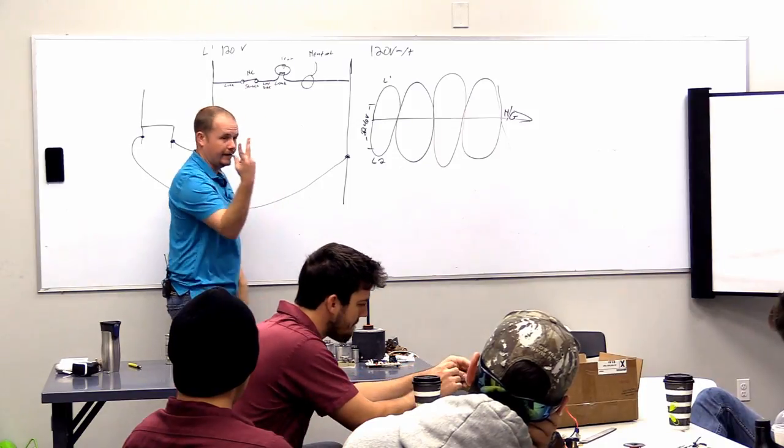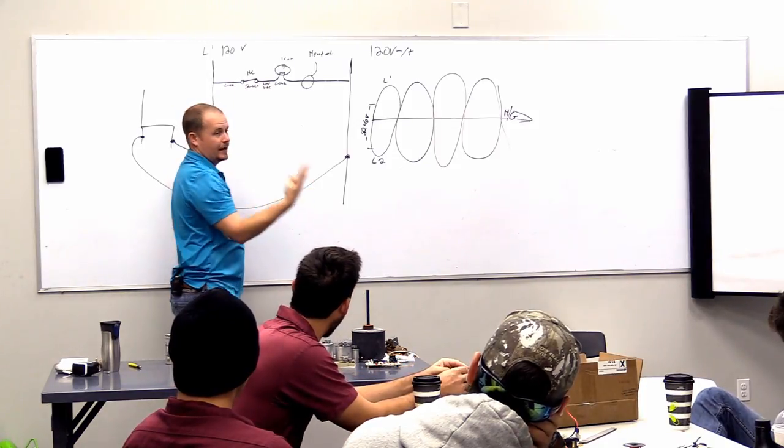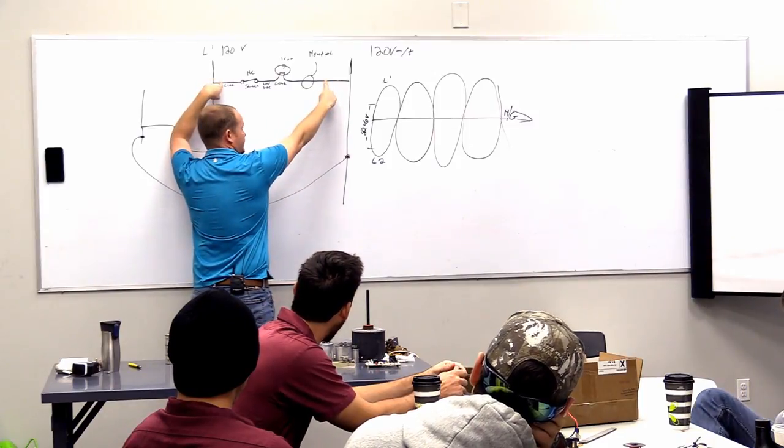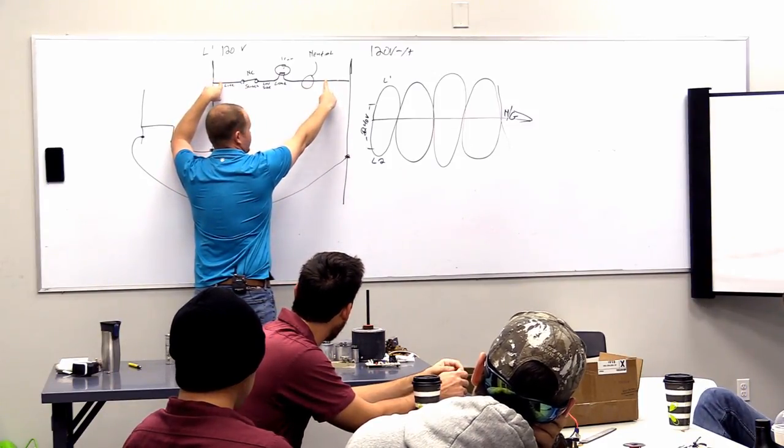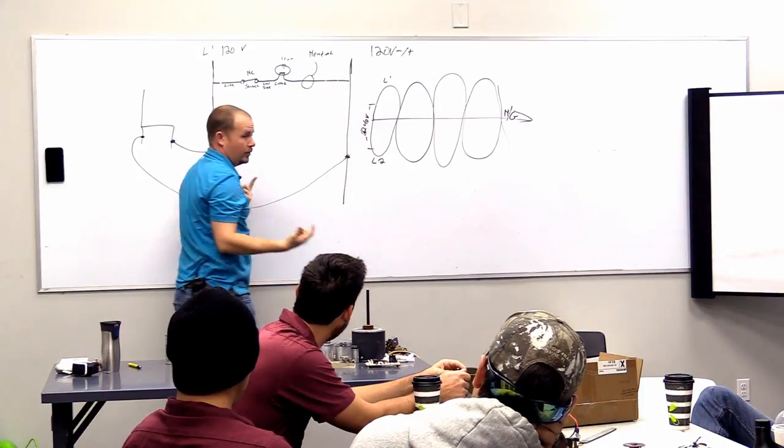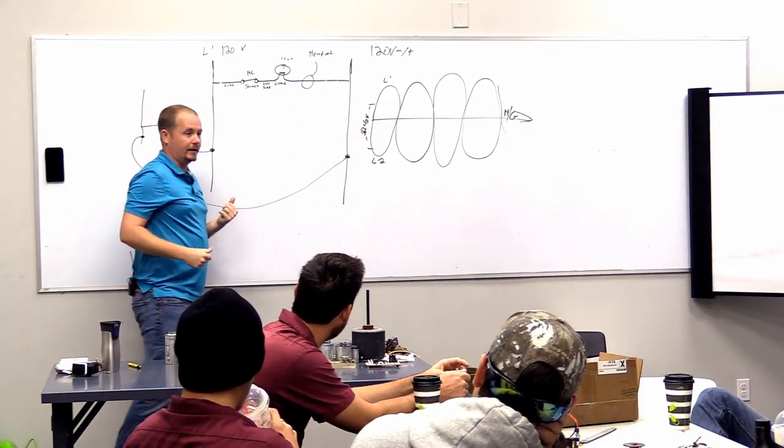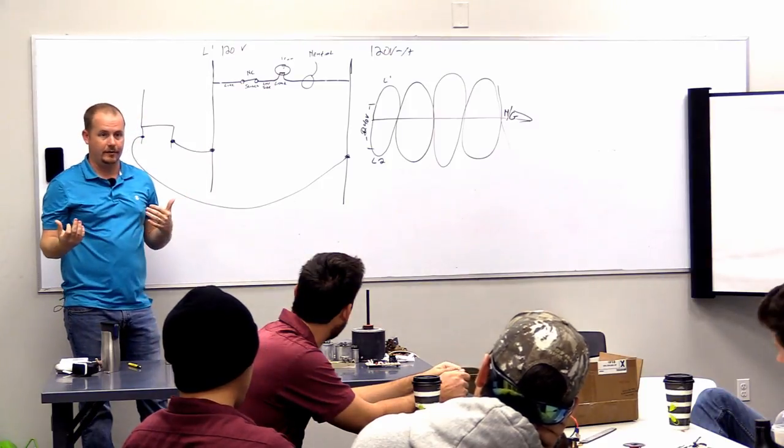Now, if this switch is closed and I take a meter and I read from here to here, what am I going to read on a 120-volt circuit? I'm going to read 120 volts because I'm wiring in my meter like a load in between the two halves of that circuit.